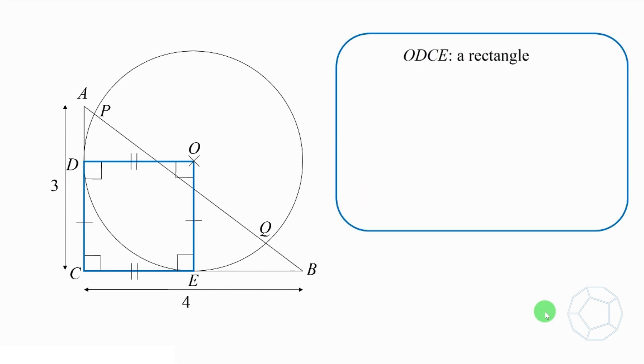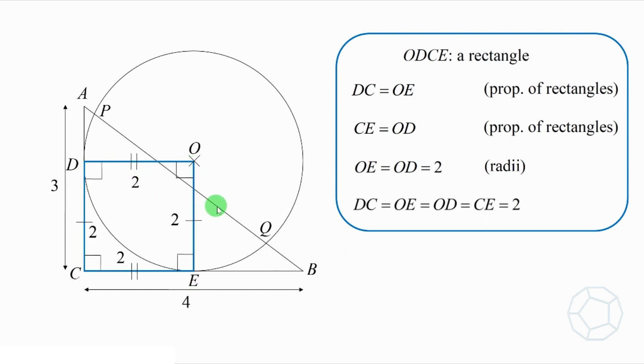This is a nice figure because we have two pairs of equal opposite sides. DC is equal to OE and CE is equal to OD. Because OE and OD are both radii, which is 2, therefore the lengths of all the four sides are also 2. So AD is equal to 3 minus 2, which is 1,